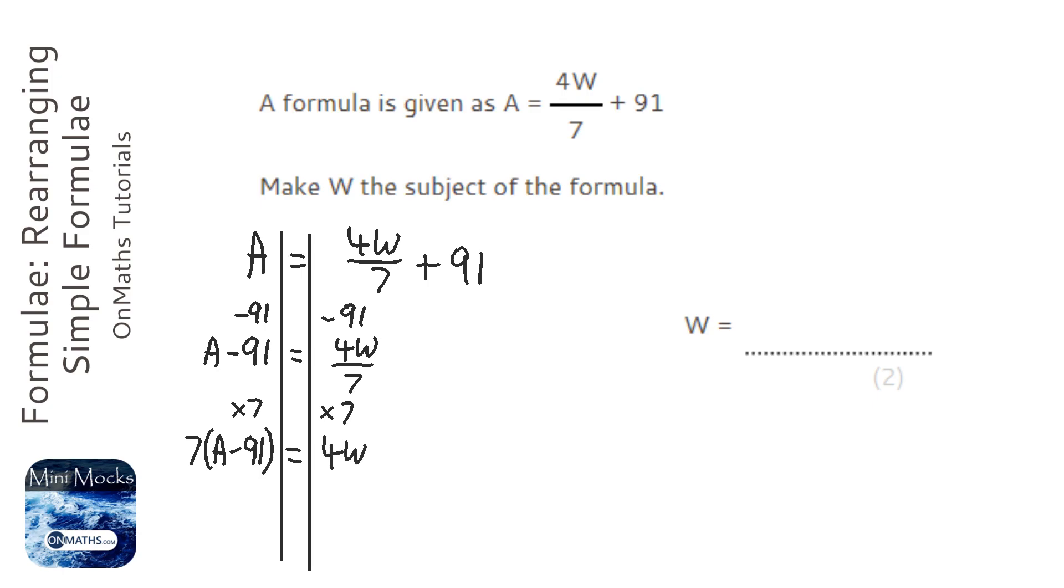Now, I'm just going to switch this around. In fact, I might switch this around and continue working up here, so I've got a bit more space. And I haven't actually changed anything, I've just switched the equation around the other way. So I've got the W on the left-hand side.